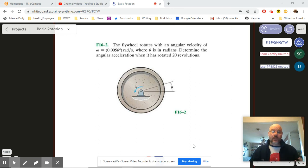In problem number two, it's very much like the one we just did. Let's break it down. We've got a flywheel that rotates with an angular velocity where theta is in radians. Determine the angular acceleration when it has rotated. So our target, what we're looking for, is angular acceleration. That's a little bit different. In terms of our variables for rotation, that means we are looking for alpha.